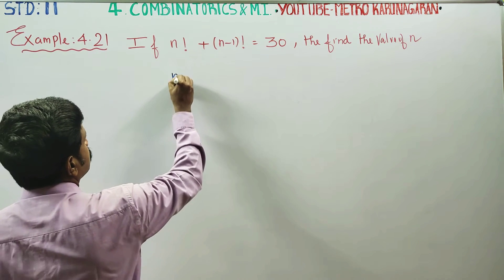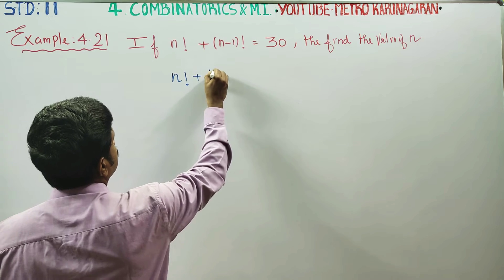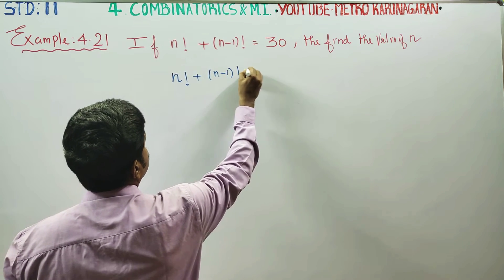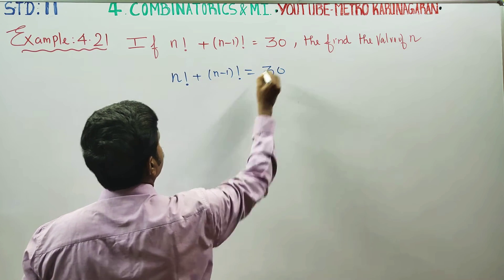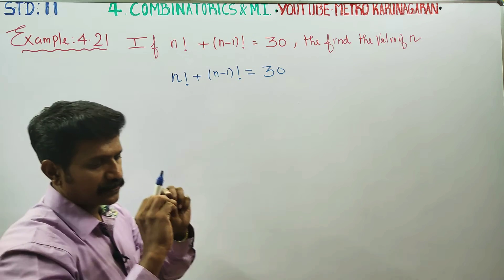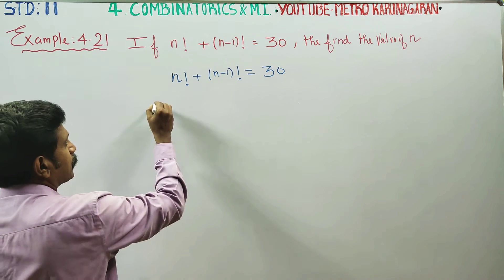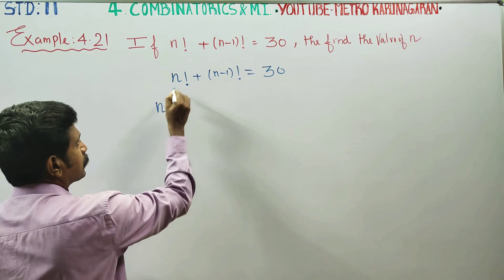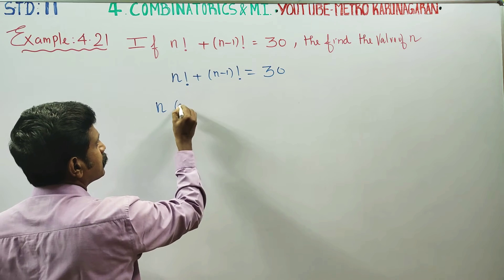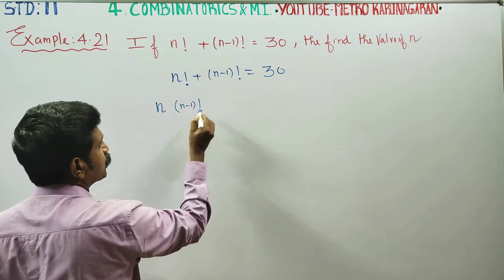It is given that n factorial plus n minus 1 factorial is equal to 30. We can rewrite n factorial in terms of n minus 1 factorial.